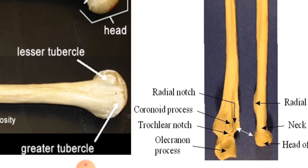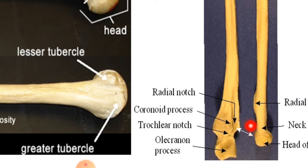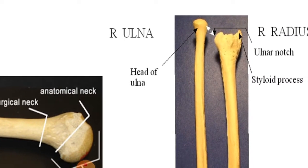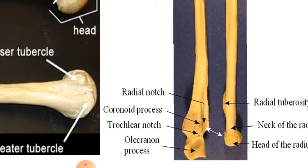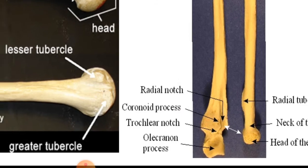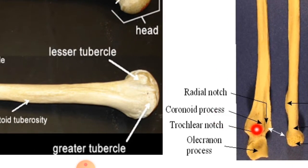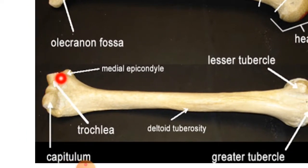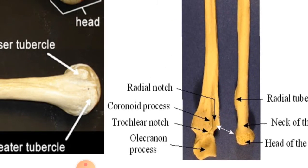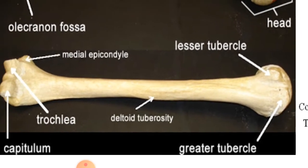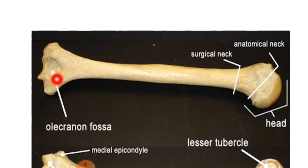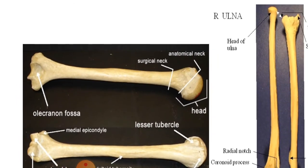Looking at the ulna, you can appreciate the radial notch, which forms the radioulnar joint at the proximal end. The radius and ulna both form the radioulnar joint at their proximal and distal parts. The coronoid process, the trochlear notch — this trochlear notch is accommodated by the trochlea on the distal end of the humerus. Here is the olecranon process of the ulna, which is accommodated by the olecranon fossa of the humerus, taking part in the formation of the elbow joint.